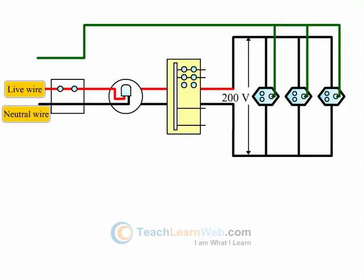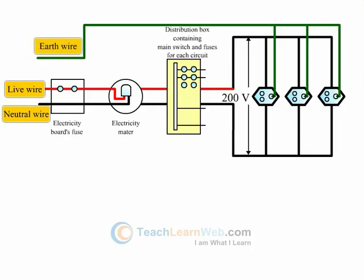The third wire is green insulated called earth wire. Earth wire is connected to a metallic body deep inside the earth.